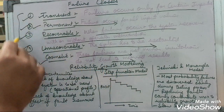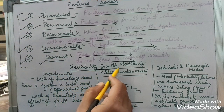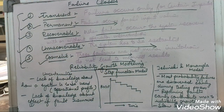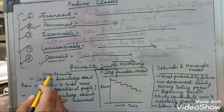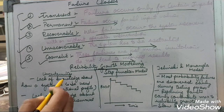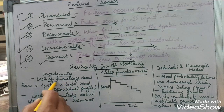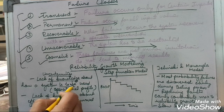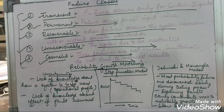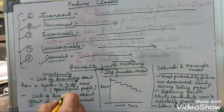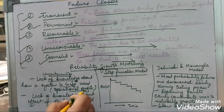Now we'll take a look at the various reliability growth models. There are many uncertainties about reliability computation. One reason for uncertainty is the lack of knowledge about how a system is to be used — the user may not be aware of the operational profile of the software product.